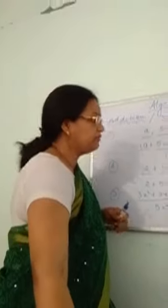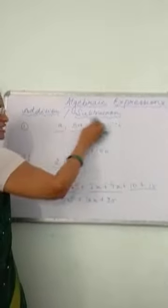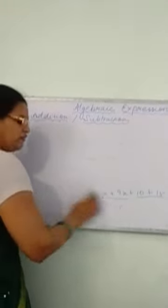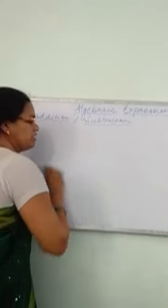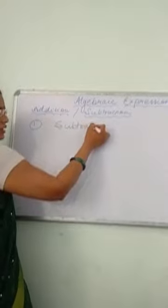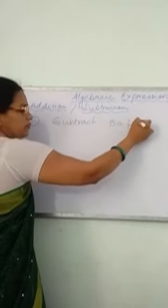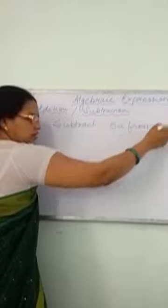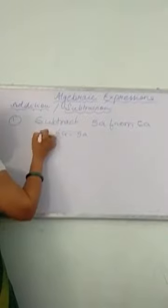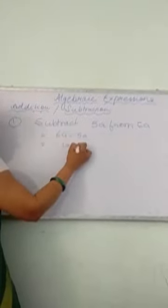The same thing applies to subtraction also — only like terms get subtracted; otherwise we keep it as it is. For example, subtract 5A from 6A. The answer will be 6A minus 5A, which is 1A — no need to write the 1, so you can simply write A.